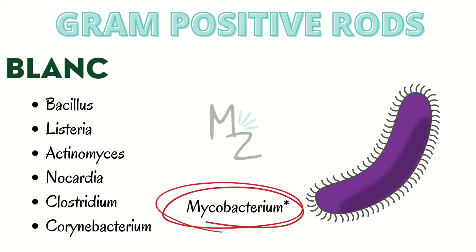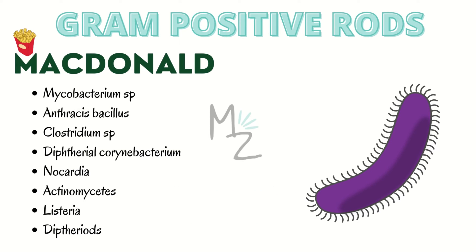If Mycobacterium is included in gram positive rods along with some species of Bacillus, we use the mnemonic 'McDonald's.' M is for Mycobacterium species, A is for Anthracis (Bacillus), C is for Clostridium species, D is for Diphtheriae (Corynebacterium), N is for Nocardia, A is for Actinomyces, L is for Listeria, and D is for Diphtheroids. If you have difficulty with pronunciation, you can slow down the video.